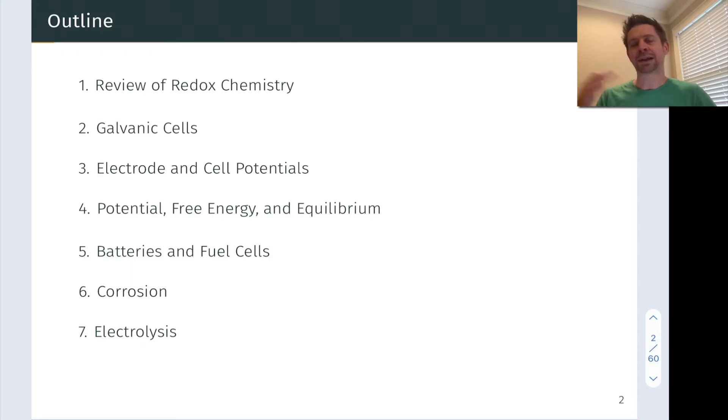From there, we're going to move into applications of electrochemistry, starting with batteries and fuel cells, and then talking about corrosion, and then finally electrolysis, which in a sense is the opposite of a galvanic cell. In an electrolysis process, we use an external circuit to send electrons into a chemical system and drive an otherwise non-spontaneous or unfavorable redox reaction.